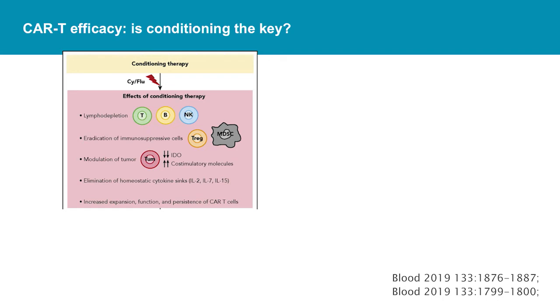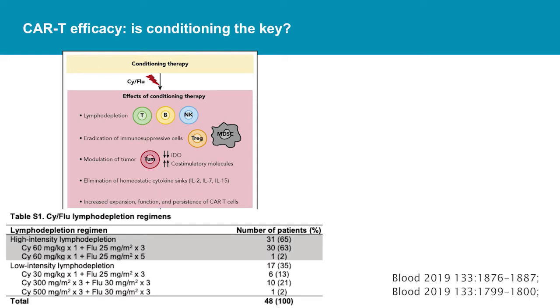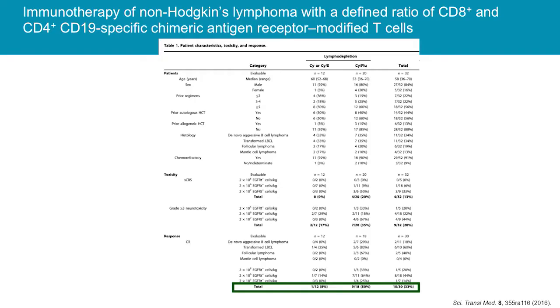Thinking about lymphodepleting chemotherapy: data from melanoma tumor-infiltrating lymphocyte studies shows that lymphodepleting chemotherapy may help by depleting T regulatory cells and myeloid-derived suppressor cells, decreasing unfavorable metabolites, increasing co-stimulatory molecules, and generally allowing CAR T cells to improve persistence and function. In a series of trials from Fred Hutchinson Cancer Center in non-Hodgkin's lymphoma with a CD19-based CAR, comparing high versus low-intensity lymphodepleting regimens showed substantial survival improvements with higher-intensity lymphodepletion — complete responders 8% versus 50% — with all patients receiving the same CAR T cell product, indicating there are more variables than just the CAR T cells themselves.